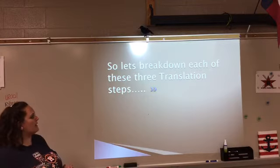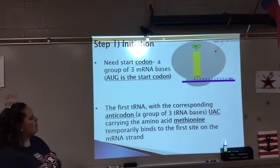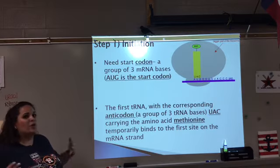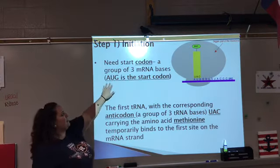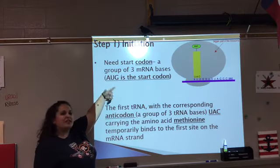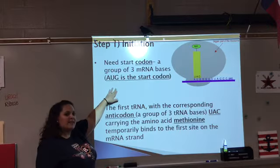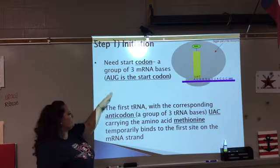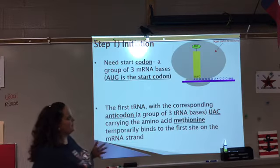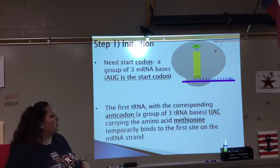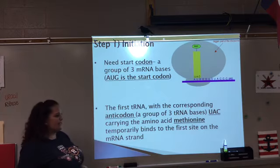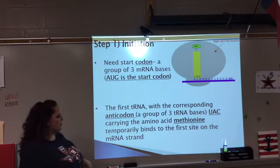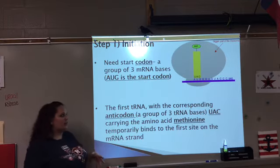In step one, initiation, you need a start codon to tell the cell to build a protein. The start codon is three mRNA bases: A, U, G — adenine, uracil, guanine. That's our universal start codon, and it also corresponds to the amino acid methionine. The first tRNA molecule comes in with its corresponding anticodon — an anticodon is three bases on the tRNA molecule, and in this case it's UAC, which is complementary to AUG — carrying the amino acid methionine, temporarily binding to the first site on the mRNA strand.